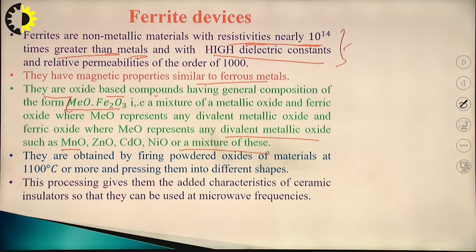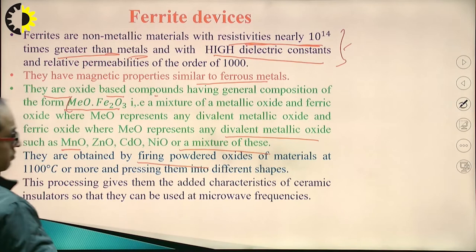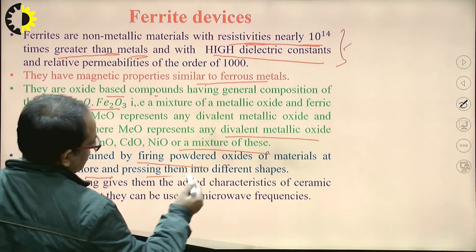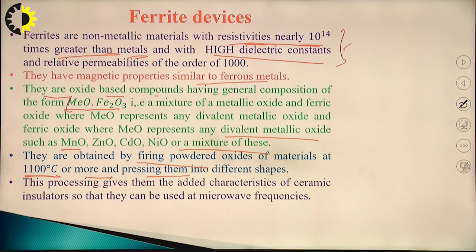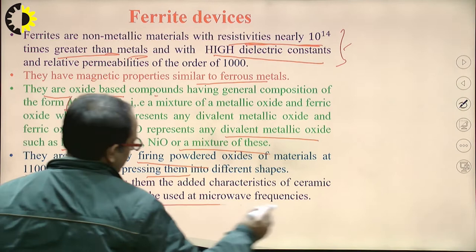Ferrites are obtained by firing powdered oxides of these materials at 1100 degrees Celsius or more, and pressing them into different shapes. This processing gives them the added characteristics of ceramic insulators, so that they can be used at microwave frequencies.